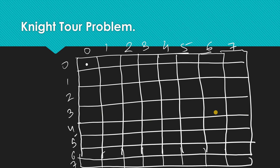The Knight's Tour problem says: if you're aware of chess, the knight moves in an L-direction. Suppose our knight is at a given position — it can move in these directions. The problem asks: starting from a given position, can we make knight moves in such a way that we are able to occupy all the cells of the board?